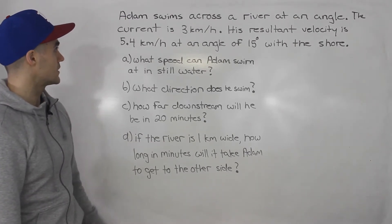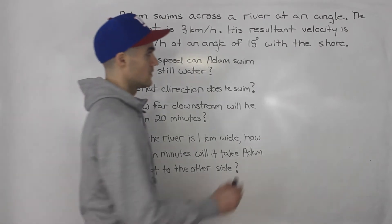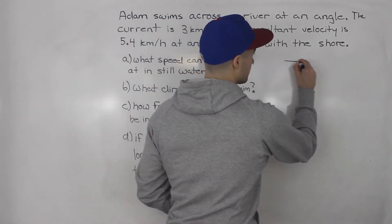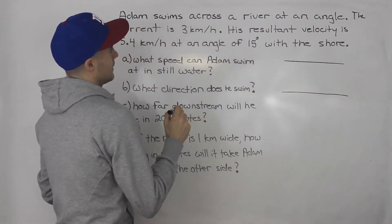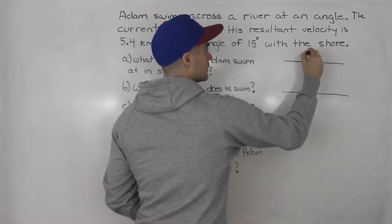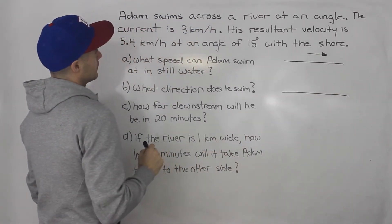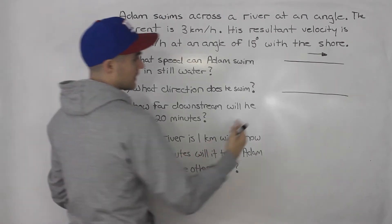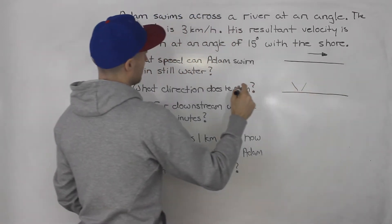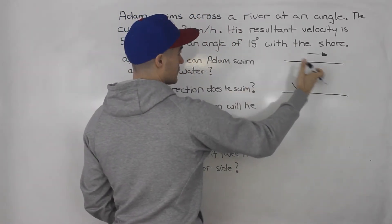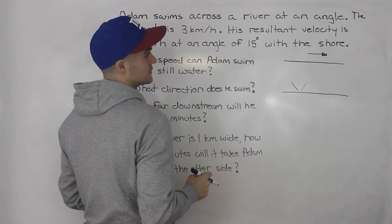Okay, so lots going on in this question. For part A — what speed can Adam swim at in still water — let's draw this river first. We've got the shores of the river, and let's say this way is downstream, so the current is going this way. Adam is going to swim across the river at some kind of angle — not directly across — and the current is going to shift him, so his resultant velocity is 5.4 kilometers per hour at 15 degrees with the shore.